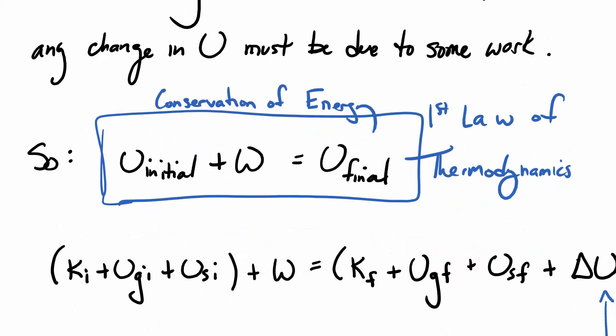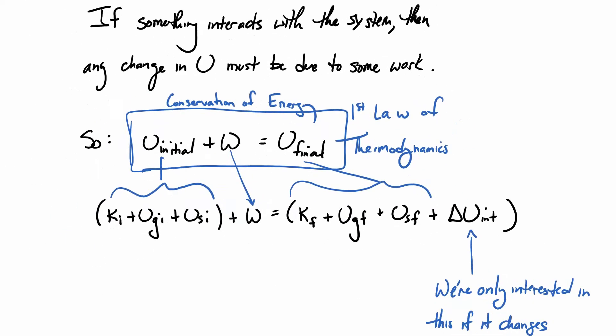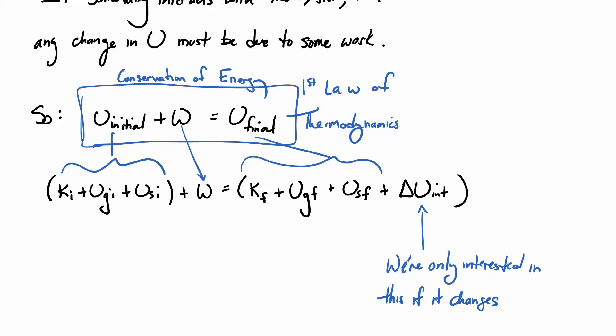So one way of looking at this in kind of a long form is that the initial energy, which is again all of these initial states, plus the work is equal to the final energy. With one note, we've added a delta U internal term, which is going to be U internal final minus U internal initial. So I just took the U internal initial term that was over here and kicked it to the other side of the equation. Because we're only interested in the internal energy if it changes. We're not going to usually care about the temperature of an object because every object is going to have some temperature. But if it gets hotter, we're going to care about that. Every object has some configuration. That's great. We're not going to really write down a term for that unless it gets deformed, in which case some energy went into accomplishing that.